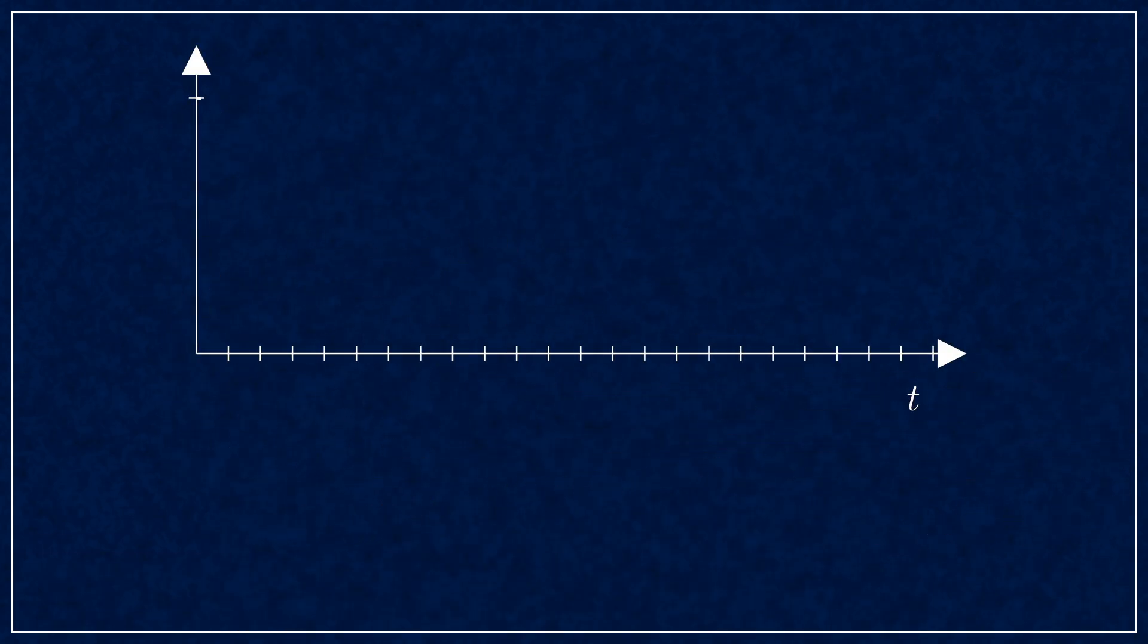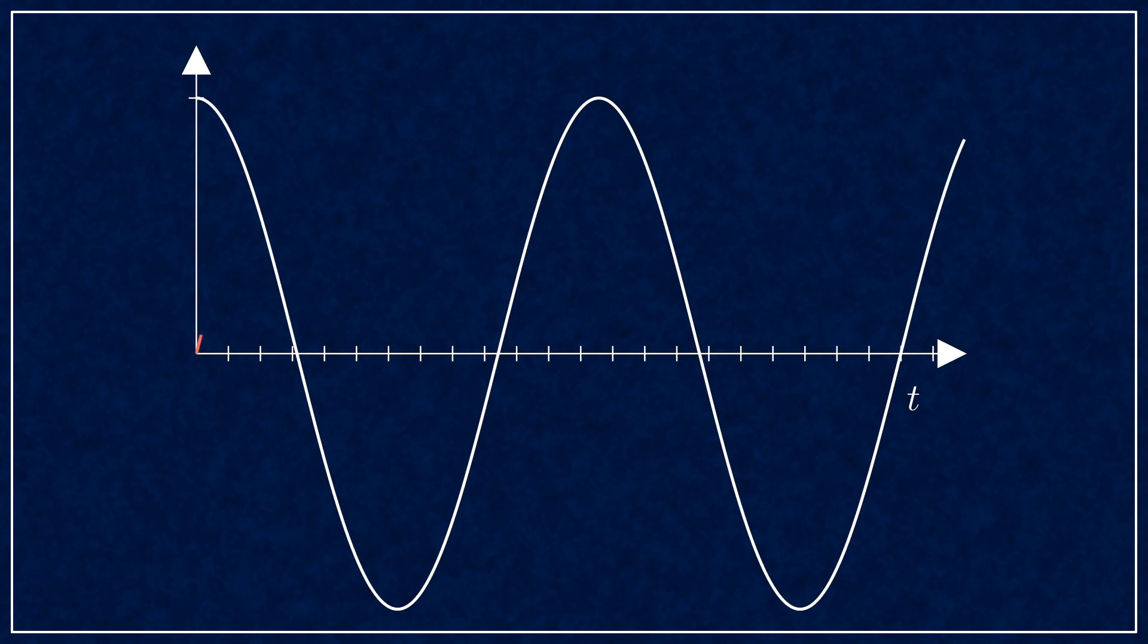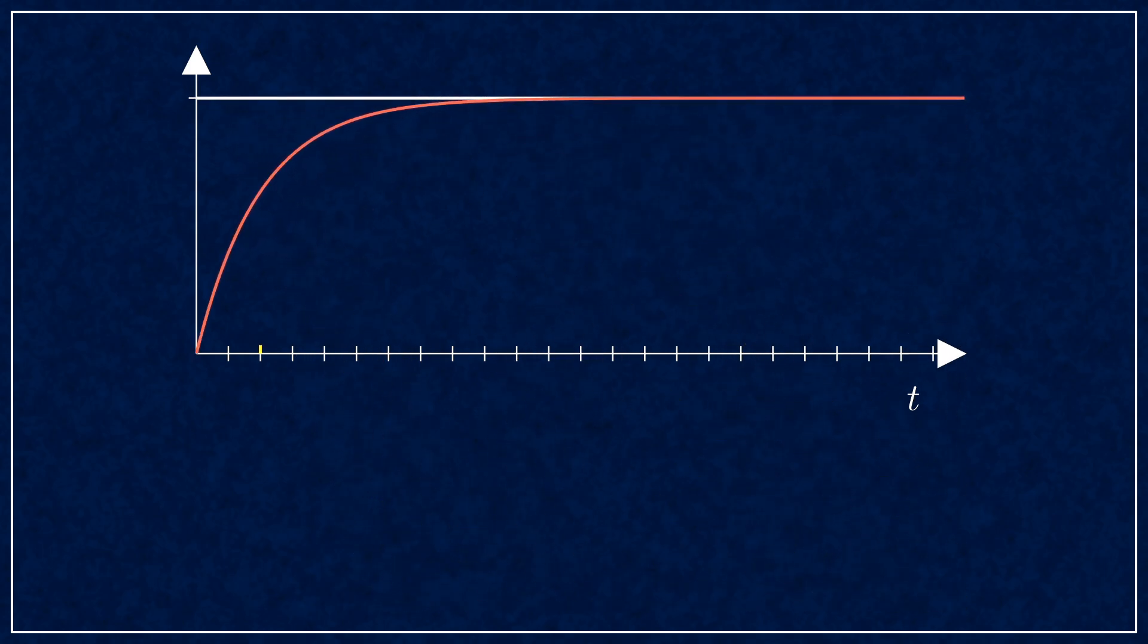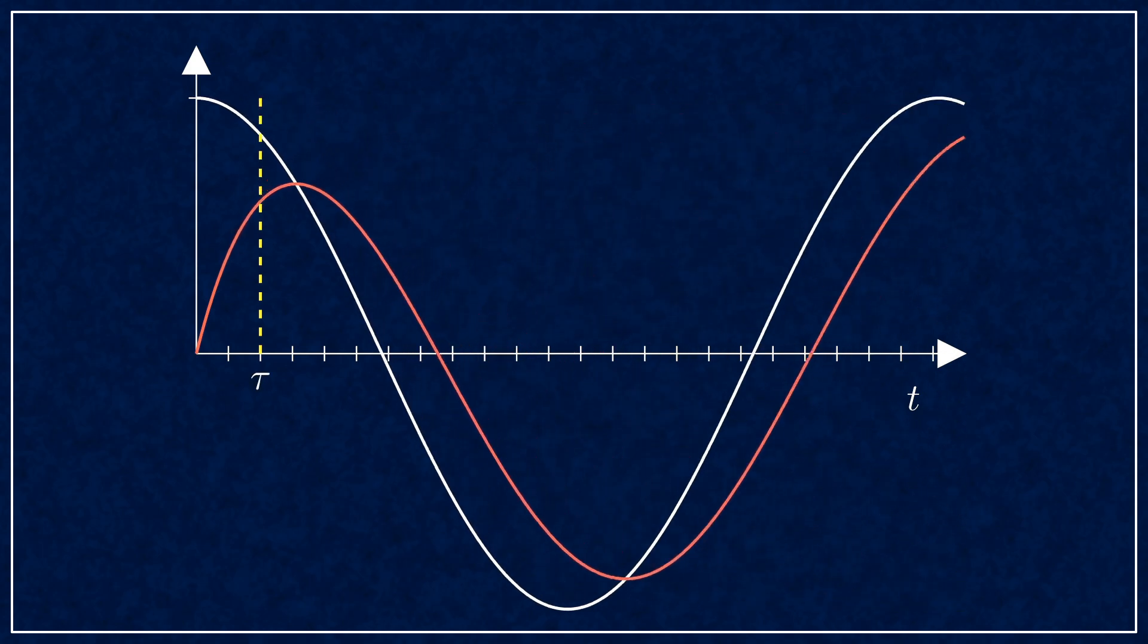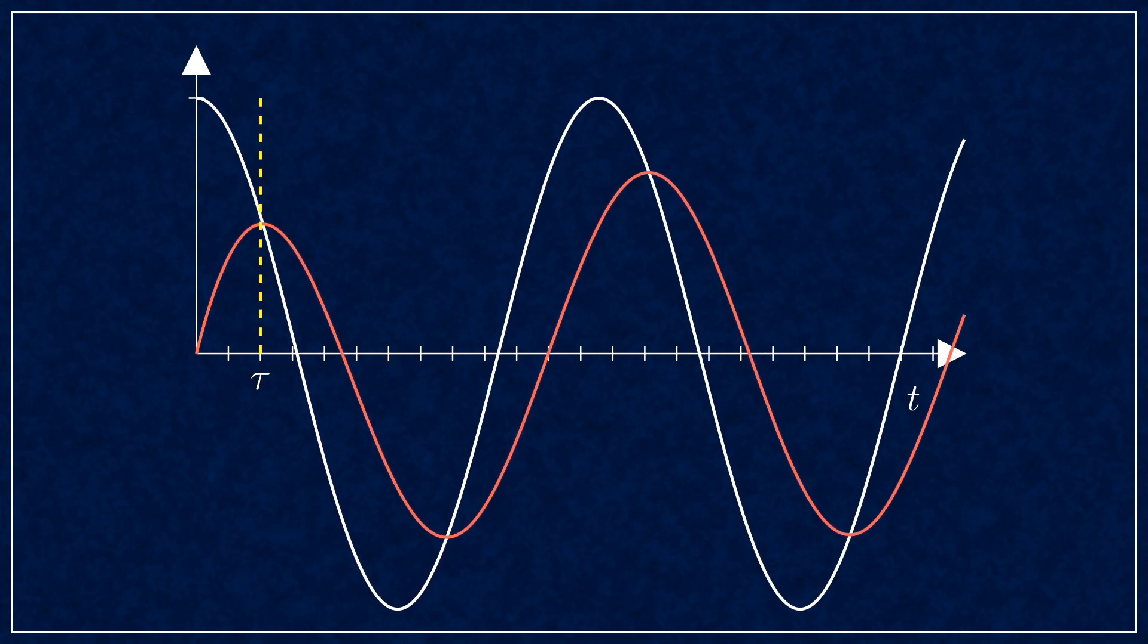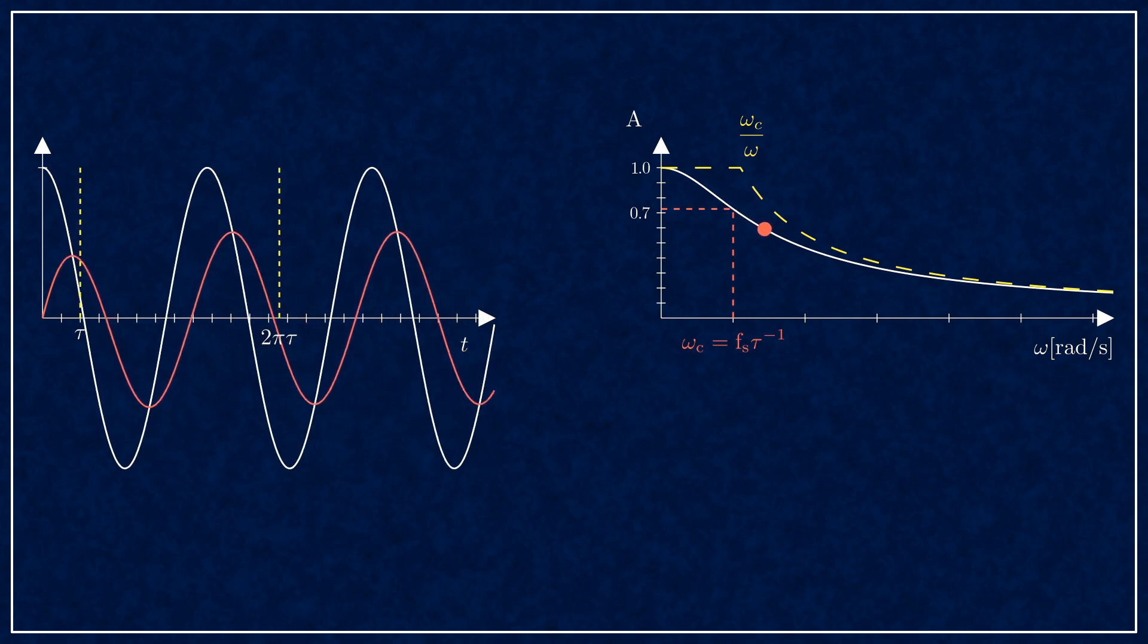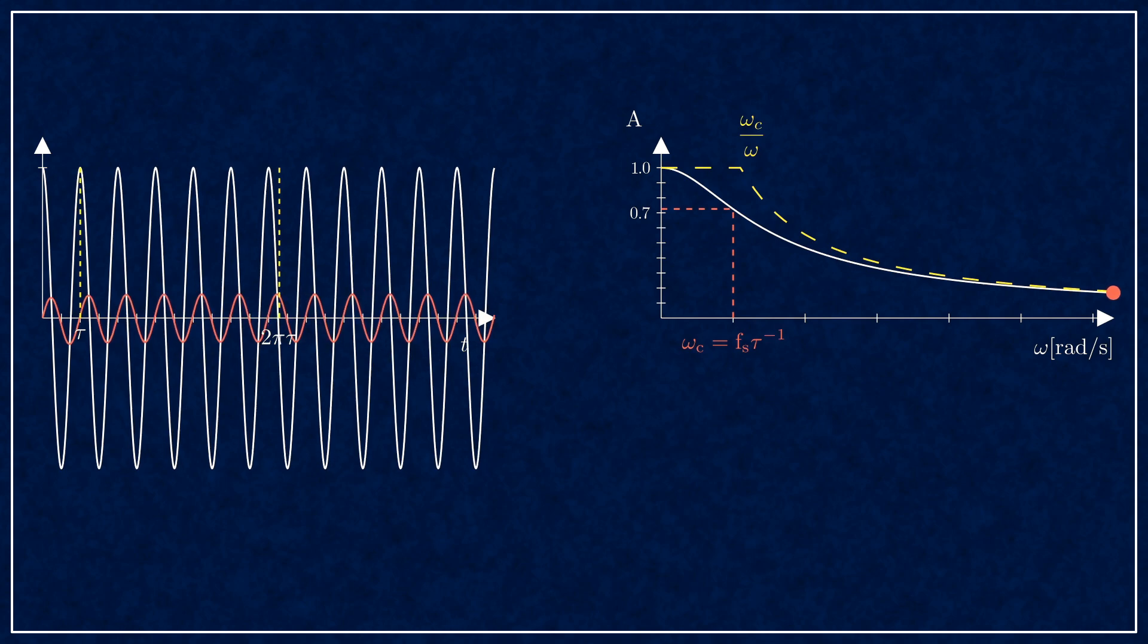Looking at this in the time domain, here's the step response, which roughly corresponds to a zero frequency response, where the gain is 1. Here's the cutoff frequency, for which you get about 70% amplitude. This is 2 pi times the time constant, so the waveform is roughly 6 times tau. If you go up in frequency 6 times, so that you get an entire wave inside the time constant, the reduction is about 1 to 6.